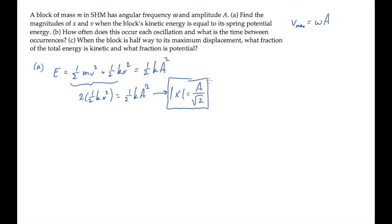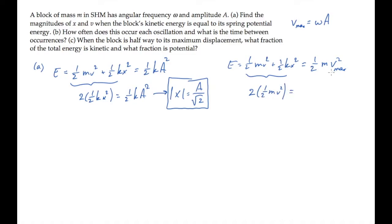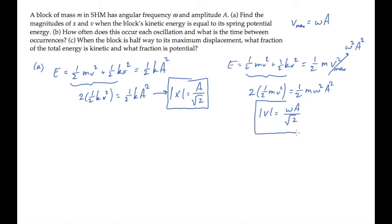If we do it again, this time rewriting the two terms as twice the instantaneous kinetic energy and replacing Vmax with the expression above, we find the speed when the kinetic and potential energies are equal is equal to omega times A over square root of 2. So that's the magnitude of position and speed when the two energies are equal.